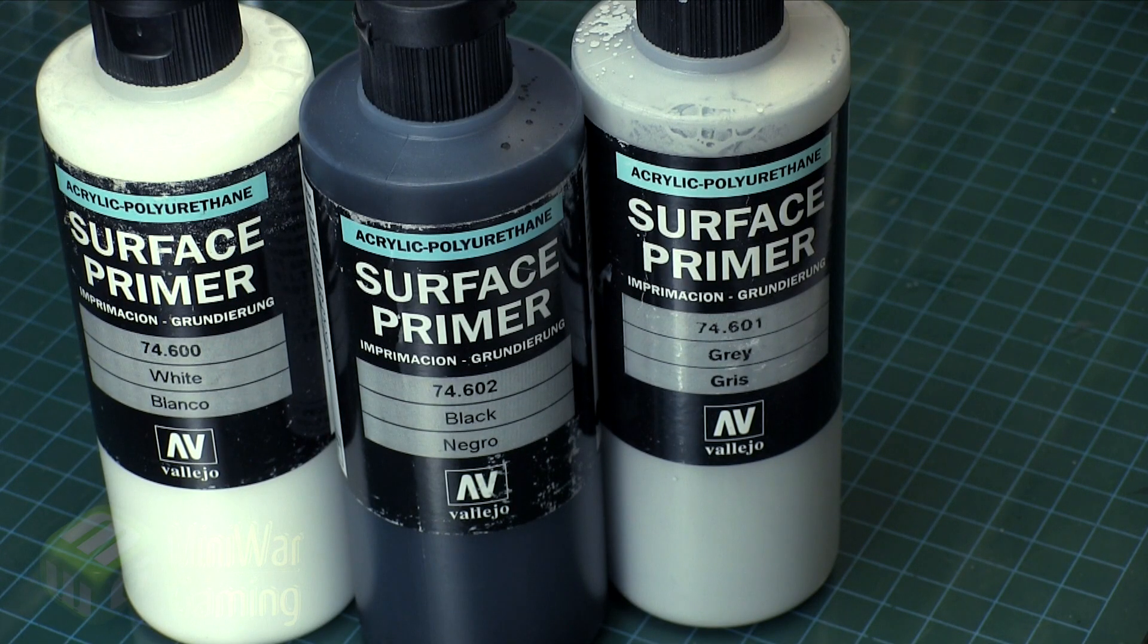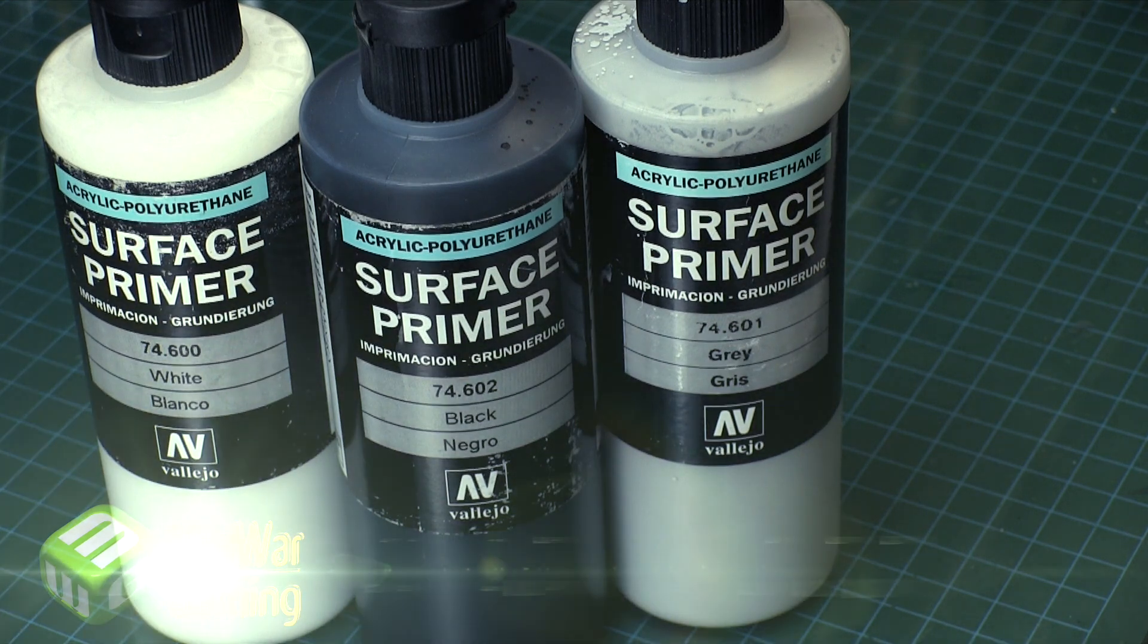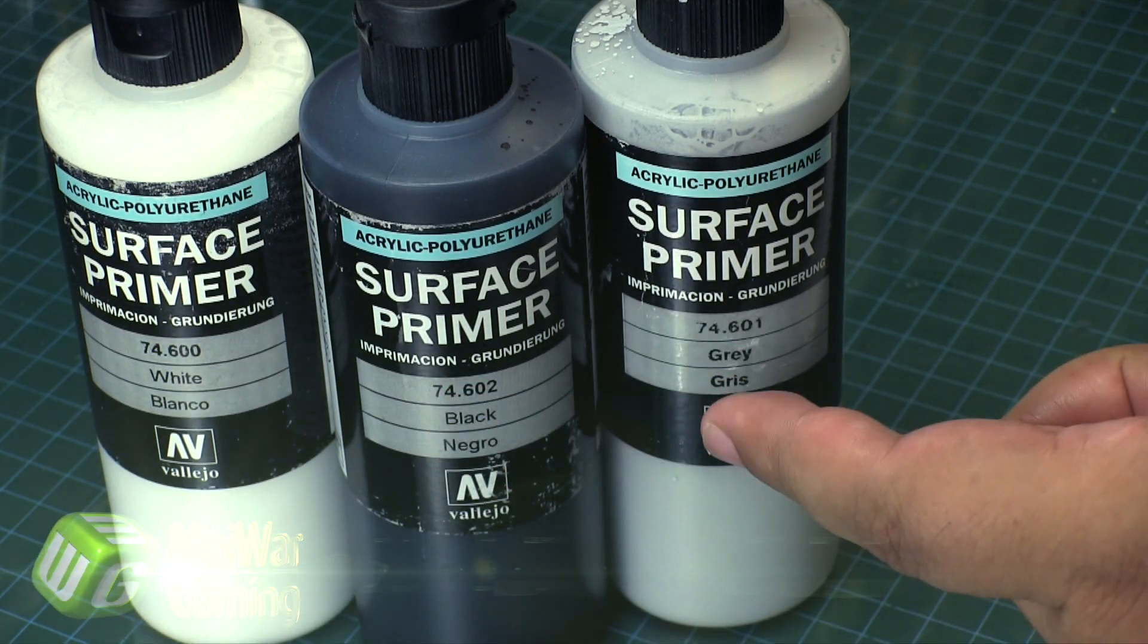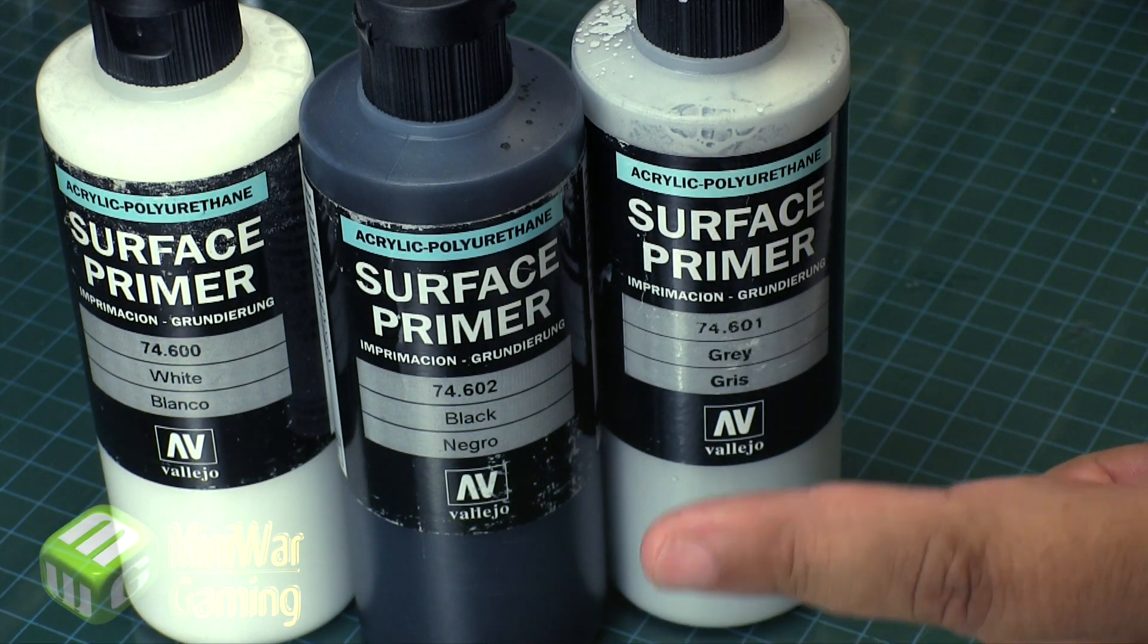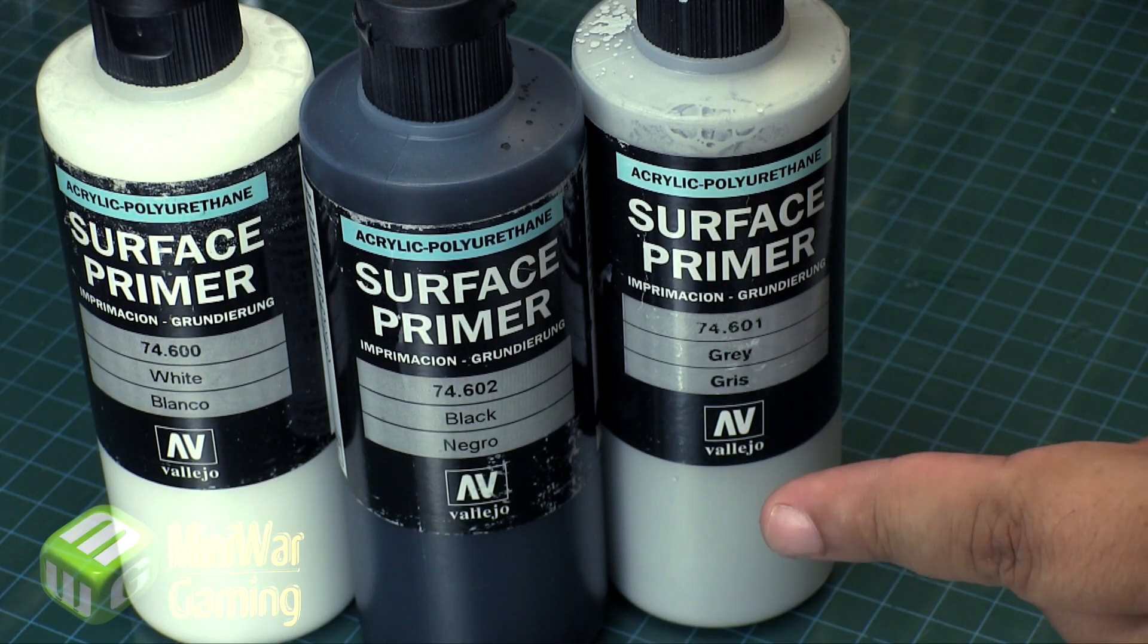Hi there, Chris here. Another quick tip for you all. In this video we're going to take a look at using airbrush primers. For the examples we have here today are the Vallejo surface primers in white, black, and light gray.